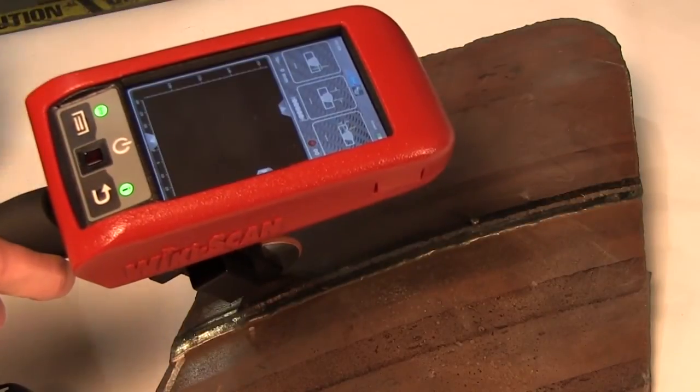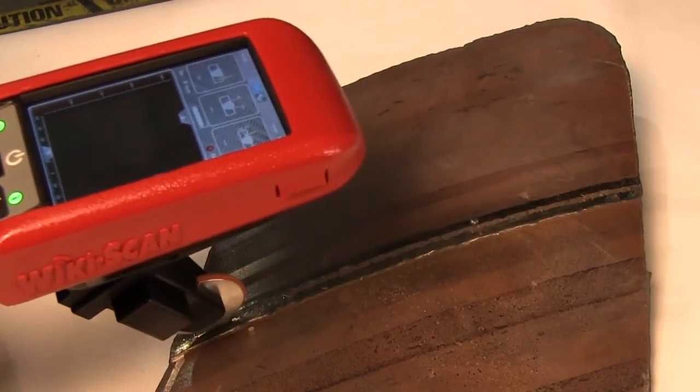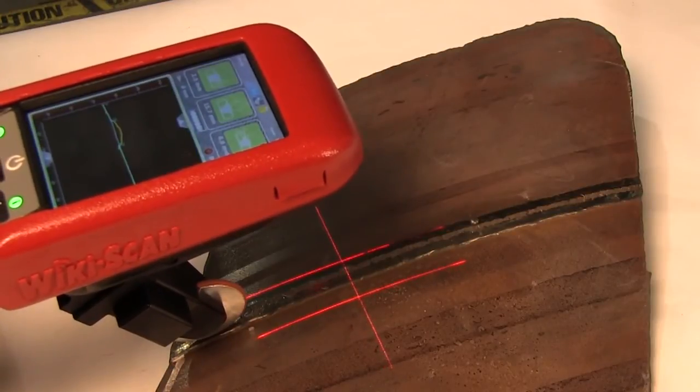Now place the Wikiscan on the weld to be inspected and start rolling the Wikiscan over the length of the weld.